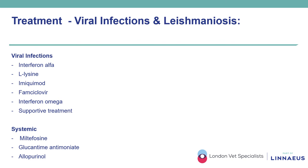When dealing with viral infections, literature suggests the use of several antiviral products including interferon-alpha, L-lysine, imiquimod, famciclovir, interferon-omega, and supportive treatment, which can be useful specifically when treating ulcerated lesions with secondary bacterial infections. Treatment of leishmaniosis is defined with different protocols; the drugs most commonly used include miltefosine, glucantime antimonate, and allopurinol, all used because of their antiprotozoal activity.